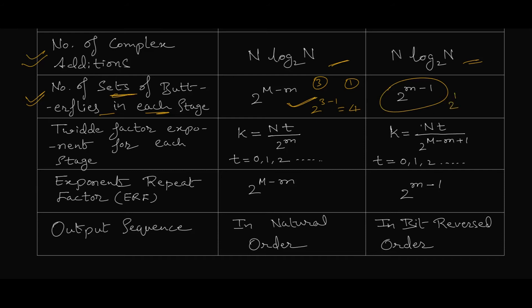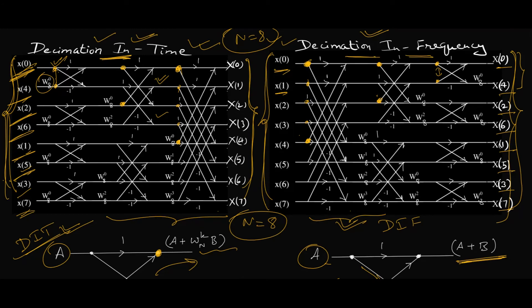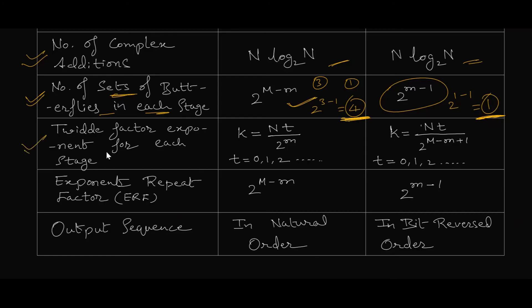For DIF the equation is somewhat different: it becomes 2^(m-1), so for stage 1 that is 2^0 = 1. You'll notice that for DIT the first stage has 4 sets of butterflies, while for DIF it has only 1. In DIT: stage 1 has 4 sets, stage 2 has 2, stage 3 has 1. For DIF it is exactly reversed: stage 1 has 1 set, stage 2 has 2, and stage 3 has 4 sets.